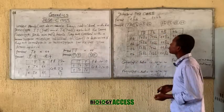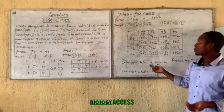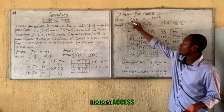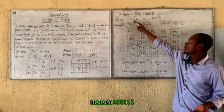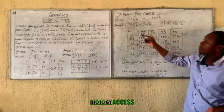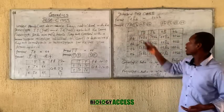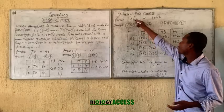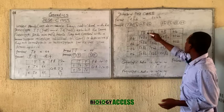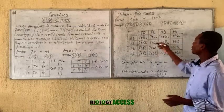You can also repeat the same thing for the dihybrid test cross. If you carry out the cross between this plant, which is heterozygote for height and heterozygote for size, and this one which is homozygote recessive, you can check my previous video for how to get the gametes. You will realize these are the gametes from each parent, and you place them into the Punnett square as usual.